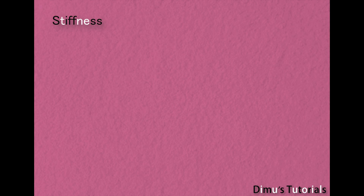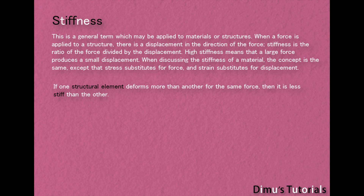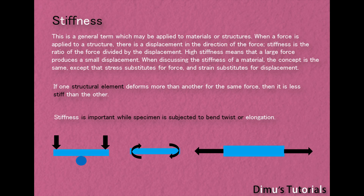Stiffness. Stiffness is a general term which may be applied to materials or structures. When a force is applied to a structure, there is a displacement in the direction of the force. Stiffness is the ratio of the force divided by the displacement. High stiffness means that a large force produces a small displacement. When discussing the stiffness of a material, the concept is the same, except that stress substitutes for force and strain substitutes for displacement. If one structural element deforms more than another for the same force, then it is less stiff than the other. Stiffness is important while the specimen is subjected to bending, twisting, or elongation.